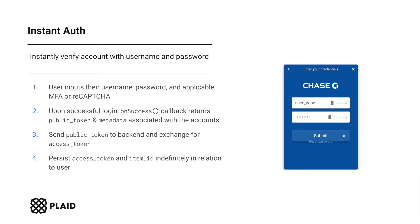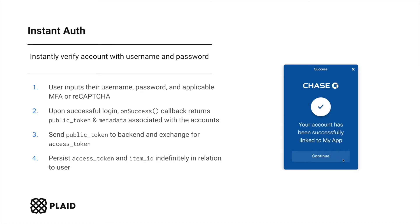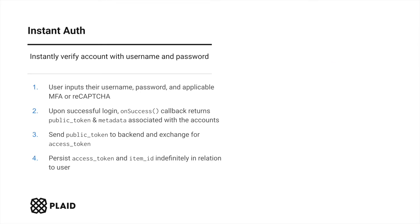You'll then send this public token to your backend, where you will exchange it for an access token via our token exchange endpoint. Then persist the returned access token and associative item ID indefinitely in relation to the user, as you'll need these when making requests to Plaid's auth endpoint and receiving webhooks for item updates, respectively. For instant auth, the access token is immediately ready to retrieve the user's auth data from their financial institution via our auth endpoint.